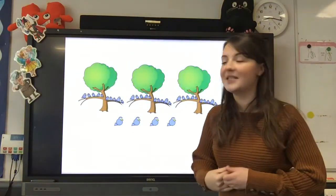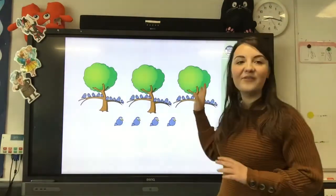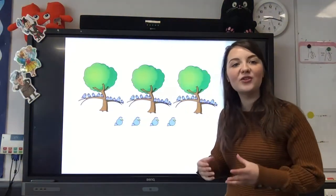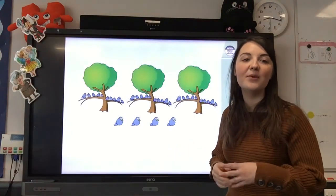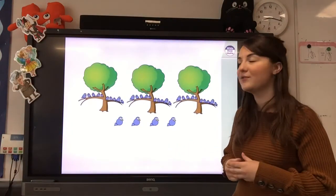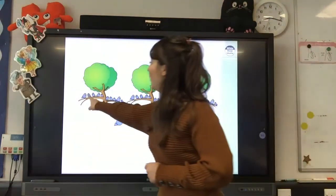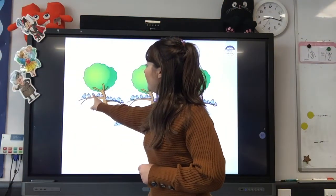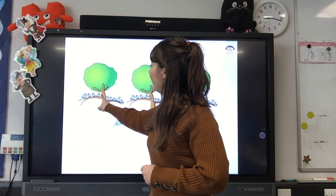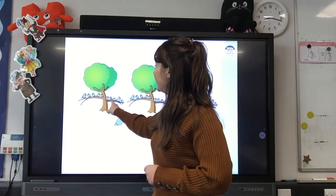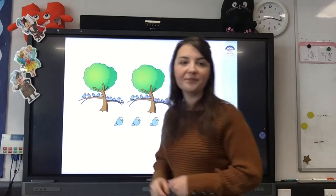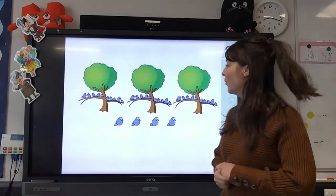Okay, now we can start our learning. So we have 3 trees here, and each tree has birds on it. Let's find out how many birds are on 1 tree. Can you count along with me? 1, 2, 3, 4, 5, 6, 7, 8, 9, 10. There are 10 birds on 1 tree.